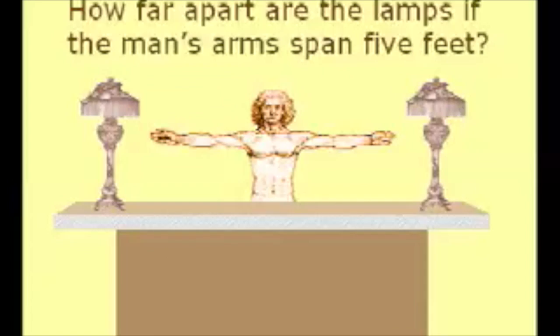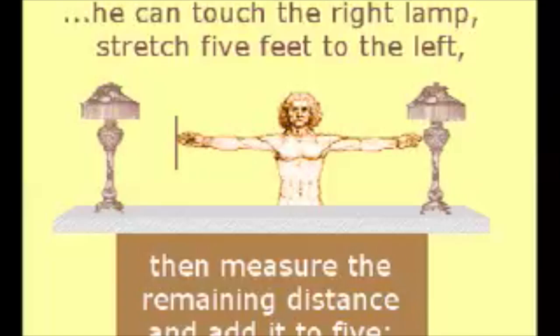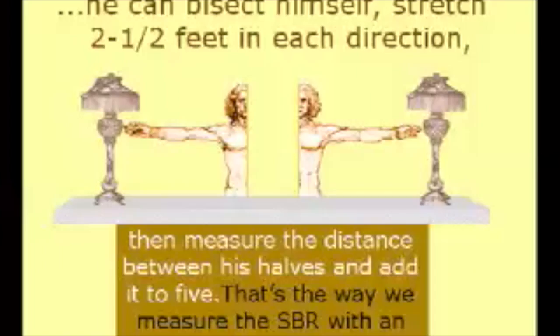Here's a puzzle: how can a man determine the distance between two lamps if his extended arms span 5 feet? He might touch the left lamp, stretch 5 feet to the right, then measure the remaining distance and add it to 5. Or he might touch the right lamp, stretch 5 feet to the left, then measure the remaining distance and add it to 5. Or he might bisect himself, stretch 2 and a half feet in each direction to touch both lamps, then measure the distance between his halves and add it to 5.